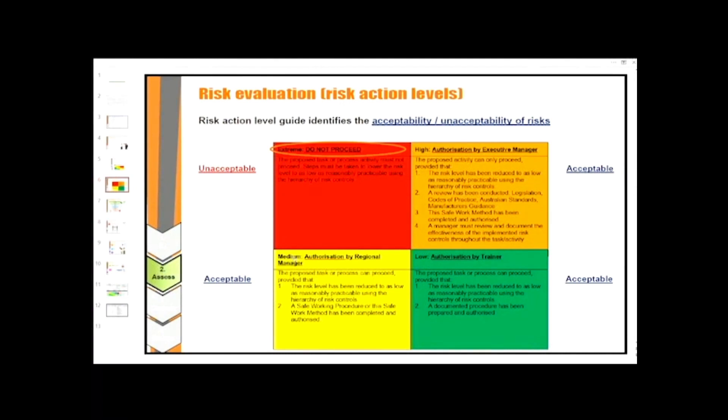When the risk is medium, authorization by regional manager is required. The proposed task or process can proceed provided that the risk level has been reduced to as low as reasonably practicable using the hierarchy of risk controls. A documented procedure has been prepared and authorized, a safe working procedure or Safe Work Method has been completed and authorized.